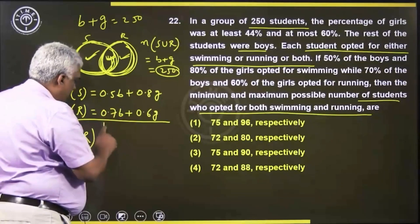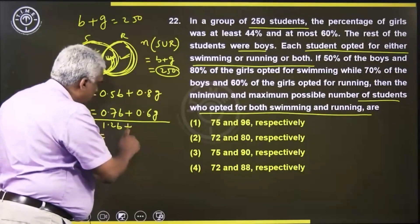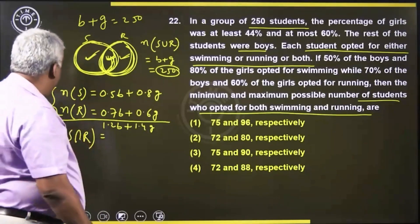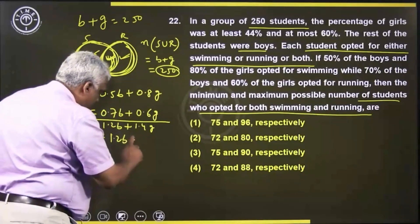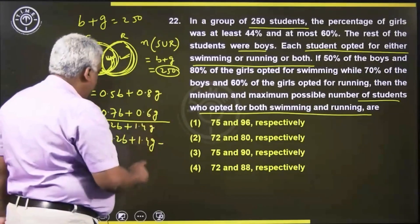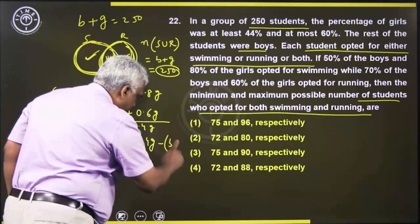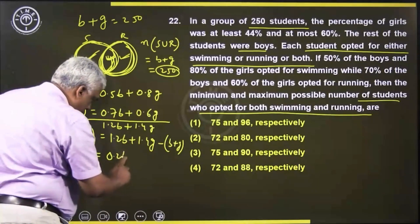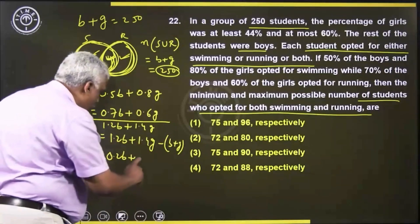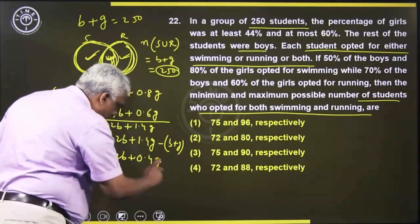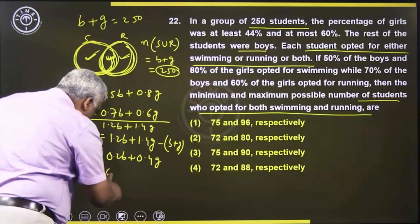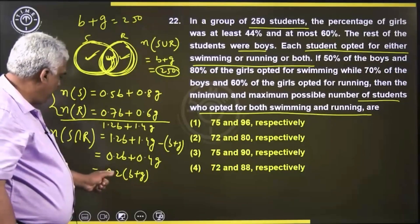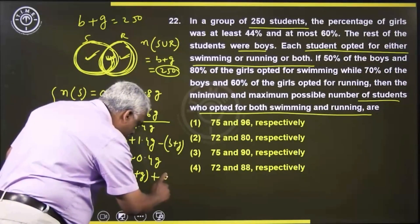Adding the swimming and running totals: 0.5B + 0.7B = 1.2B, and 0.8G + 0.6G = 1.4G. So the number doing both is 1.2B + 1.4G minus (B + G), which gives 0.2B + 0.4G. This can be rewritten as 0.2(B + G) + 0.2G, which equals 50 + 0.2G, since B + G = 250.